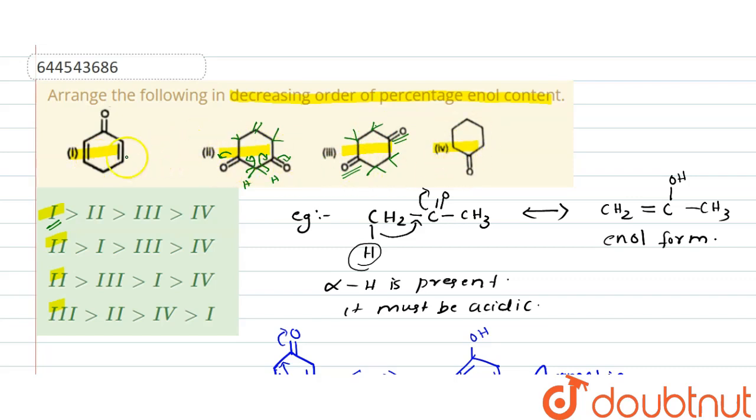So here we can see that first one is more stable, and it is more enol content. So the option 1-2-3-4, first one, option A is the correct answer.